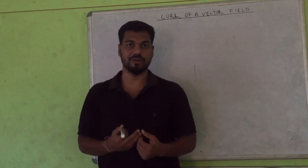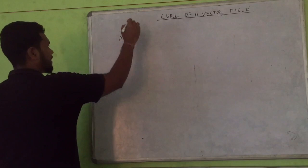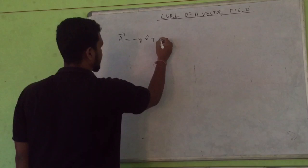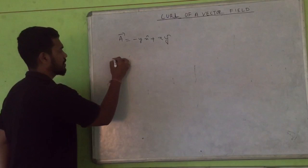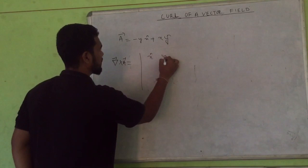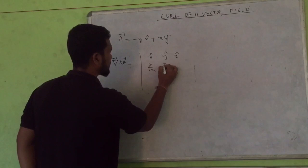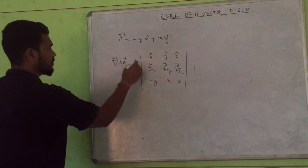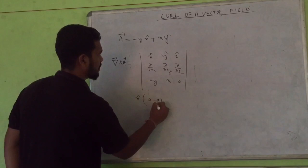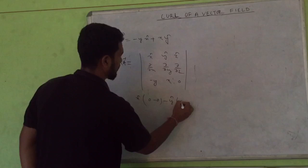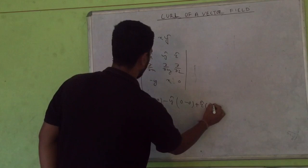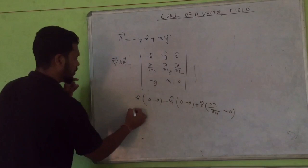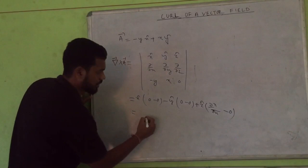Let's take an example. Suppose a vector A equals minus y x-cap plus x y-cap in two dimensions. If you calculate curl of A, that is grad cross A, the determinant has rows: x-cap, y-cap, z-cap; del/del x, del/del y, del/del z; and components −y, x, 0. If you calculate this, you get z-cap (del x/del x − 0), giving the value of the curl equal to z-cap.